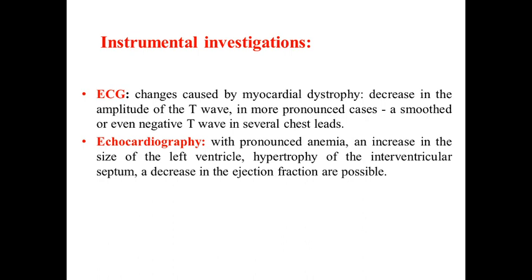Iron deficiency anemia should be treated for a prolonged period. First, we should normalize the hemoglobin level, and second, our goal is to increase the iron stores in tissues — this takes time, sometimes more than half a year, or even one to two years depending on severity. The increase of hemoglobin after starting treatment is about one gram per liter per week. So if your patient has, for example, a 30 gram per liter deficiency of hemoglobin, treatment needs at least 30 weeks.